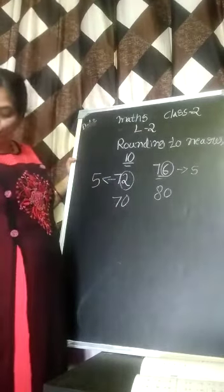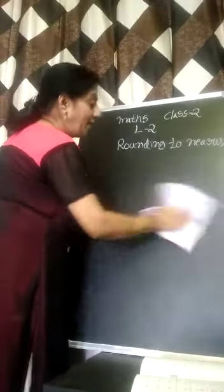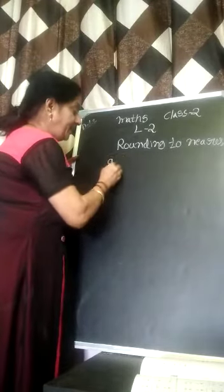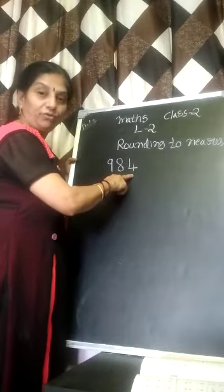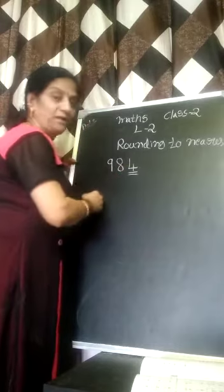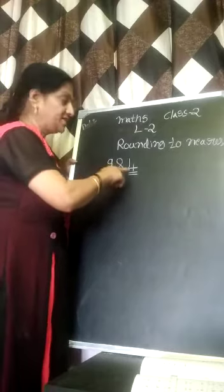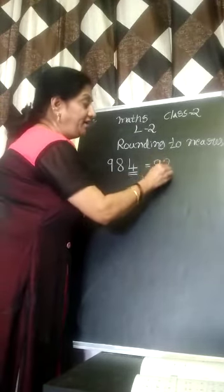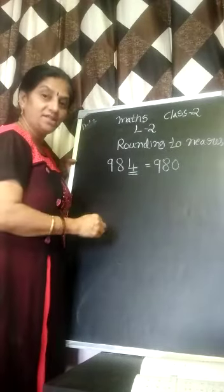Now I am going to show you another example. See here — 984. What I told you: you have to concentrate on the ones place. The ones place is lesser than 5, right? This is a smaller number than 5, so you have to make it as 980.